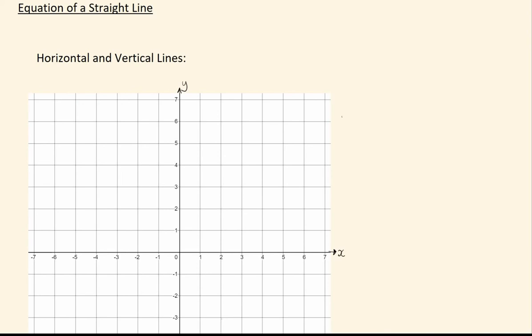So horizontal and vertical lines are one of the simpler things to get your head around. If you want to plot the line, say y equals 4, all you need to do is find the y-axis, find where the 4 is, and it's going to be a straight line going across that 4. And that's all there is to it.